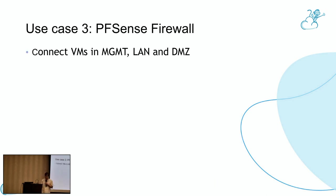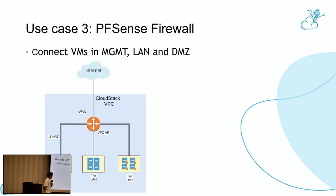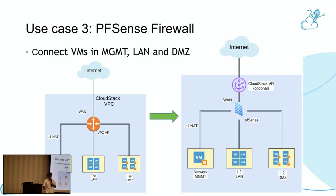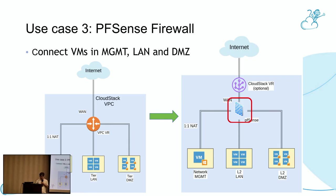Another use case: we have a CloudStack VPC which contains several tiers — for example, a menu server, and a DMZ tier. We use the CloudStack VR as the gateway of the VPC tiers, but we are looking for alternatives. For example, we can use PFSense instead of the VPC VR. I will use this as an example of how to support VNF in CloudStack.